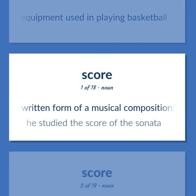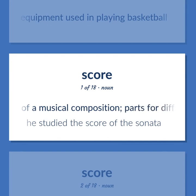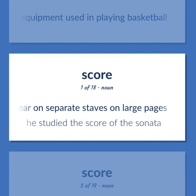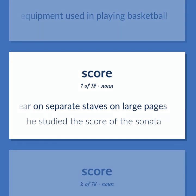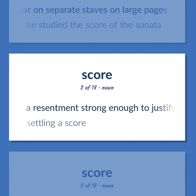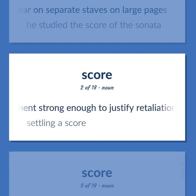Score: a written form of a musical composition where parts for different instruments appear on separate staves on large pages. He studied the score of the sonata. Also, a resentment strong enough to justify retaliation — settling a score.